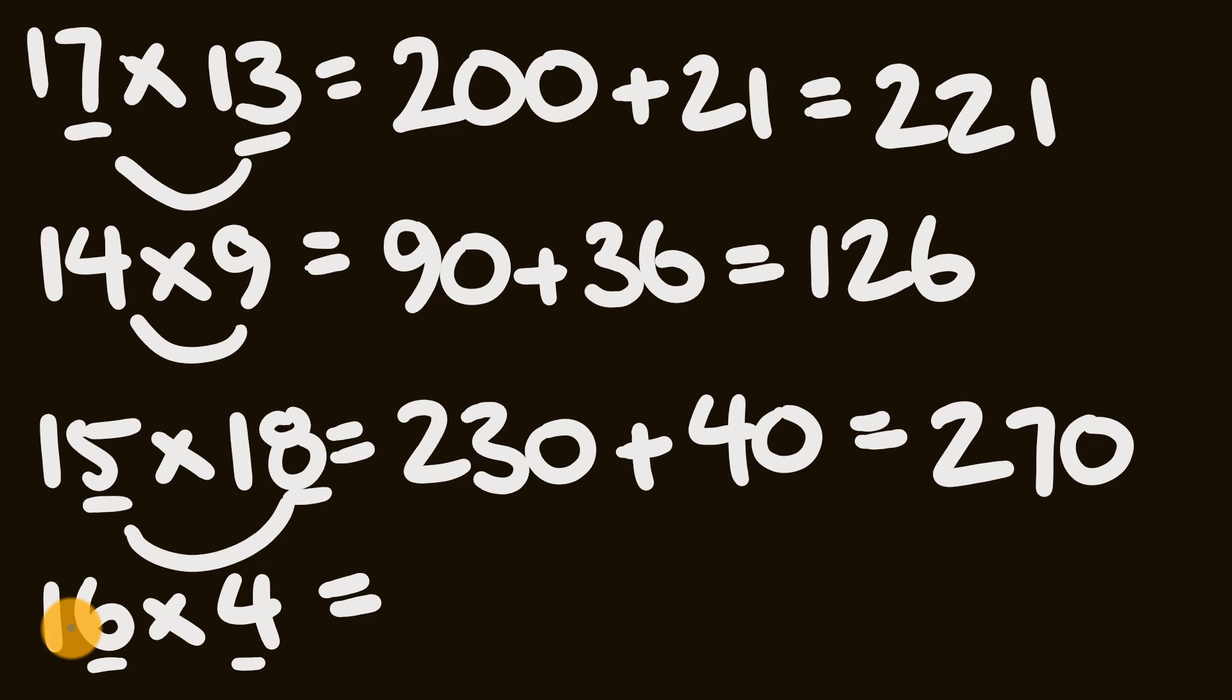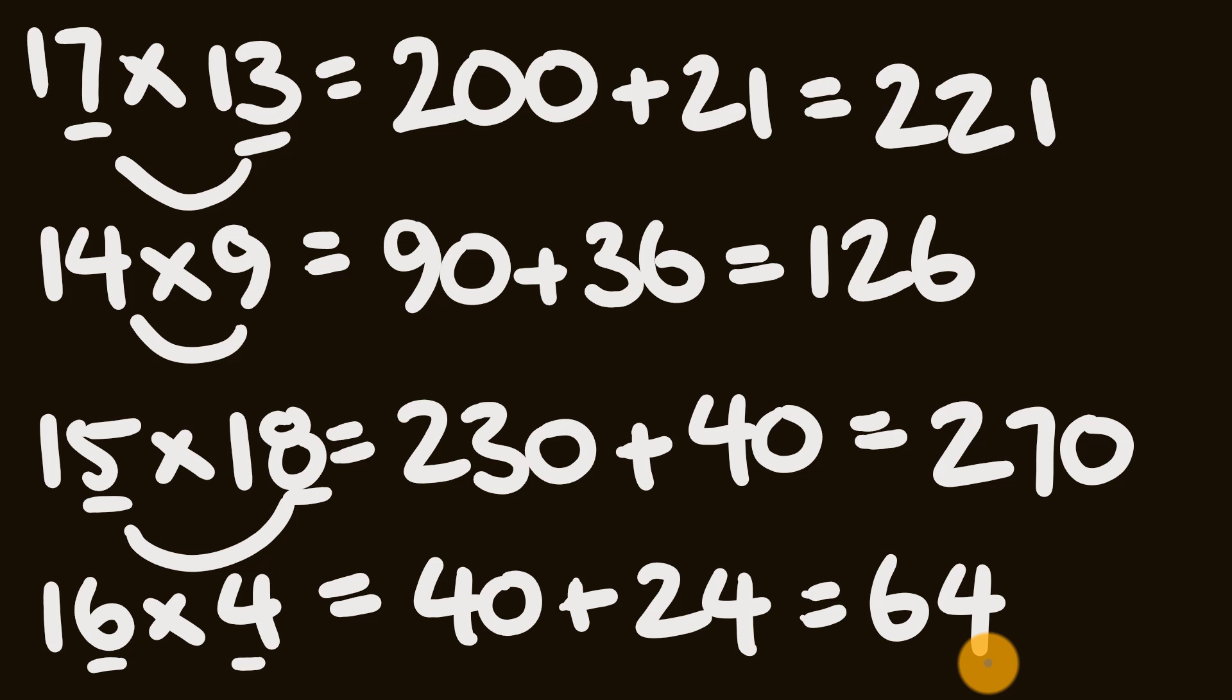Now finally we have 16 times 4. So the way that we're going to do this is, first off, we have 10 times 4, which is 40, and to that we're going to add 6 times 4. 6 times 4 is 24, and this gives us the answer of 64.